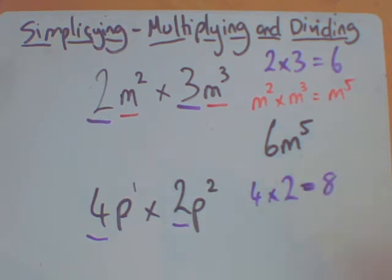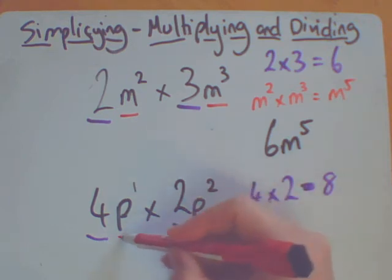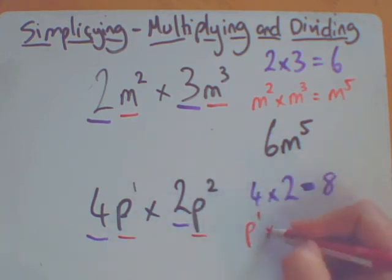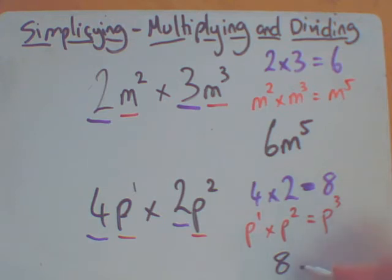I've then got p to the power 1 times p squared, and that is going to give me p to the power 3. So my final answer is 8p to the power of 3.